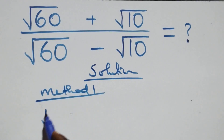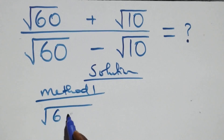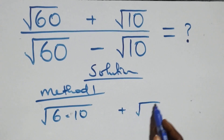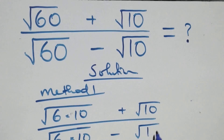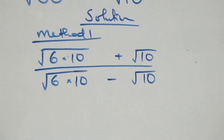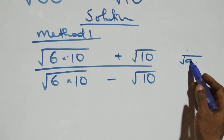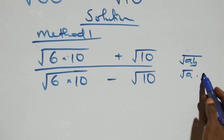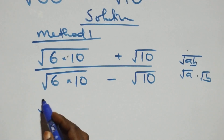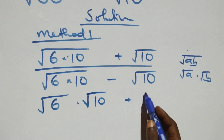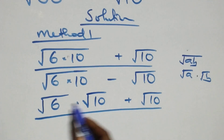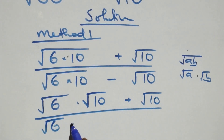We can rewrite the expression as root of six times ten plus root ten, all over root six times ten minus root ten. This follows from the rule that root of a times b can be separated as root a times root b. So the expression becomes root six times root ten plus root ten, over root six times root ten minus root ten.